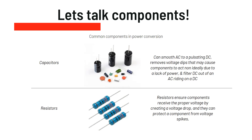Resistors ensure that components receive the proper voltage by creating a voltage drop from one side to the other, because they impede the current going through them. They can also protect components from voltage spikes.